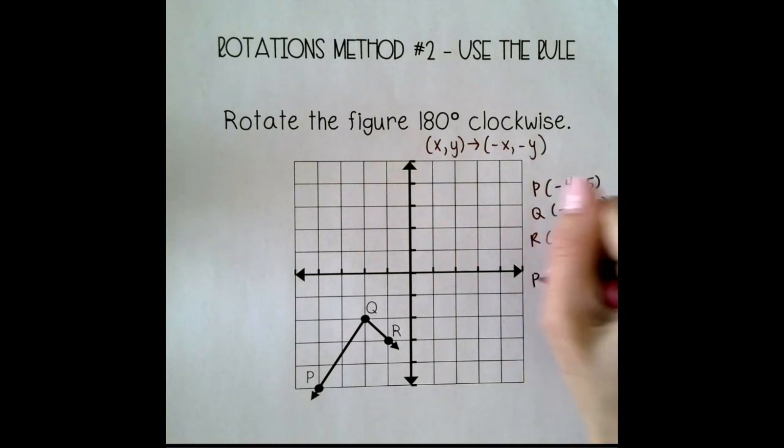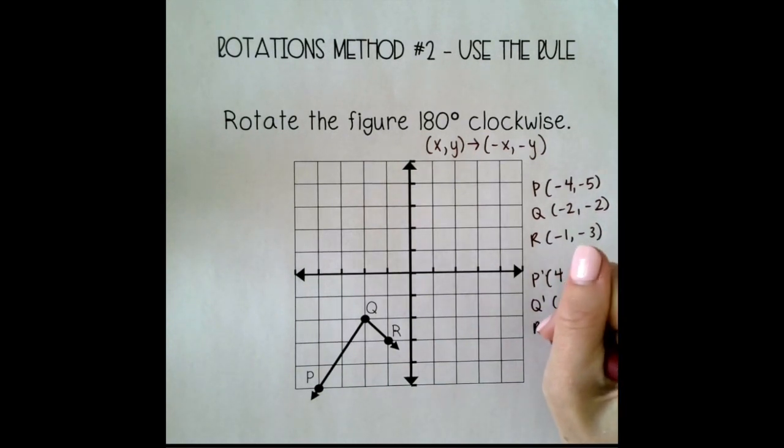So P prime will become positive 4, positive 5. Q prime will become positive 2, positive 2. And R prime will become positive 1, positive 3. And then I just plot those points on my graph.